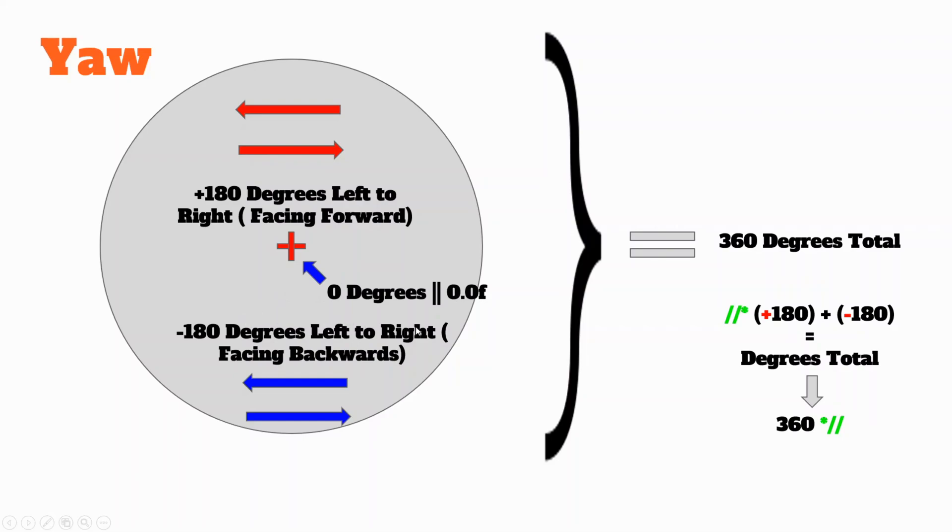Now if you look behind your player, from left to right it is negative 180 degrees. So when you look behind you, it's negative. Therefore, your total degrees is 360. Same way we found the other one, if we remove the operators, it's 180 plus 180, which is 360 degrees total.